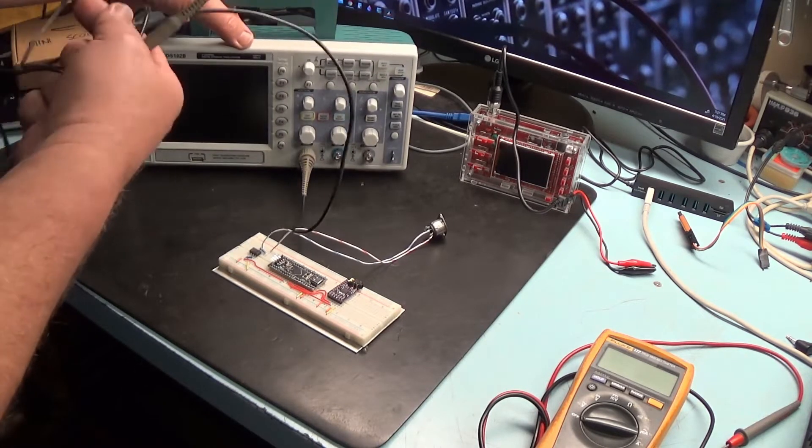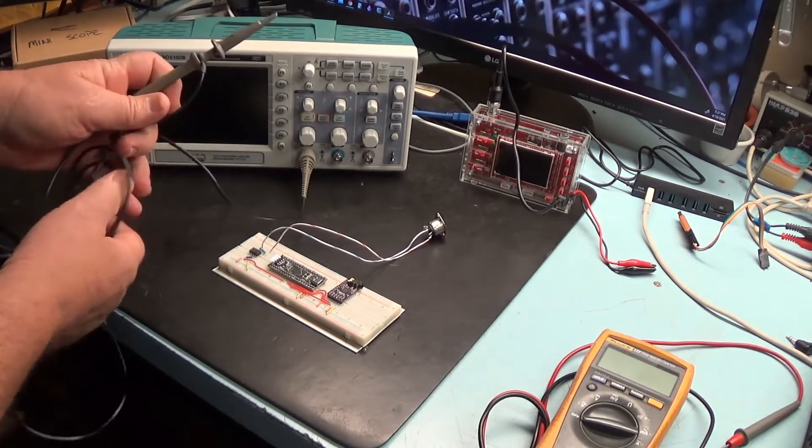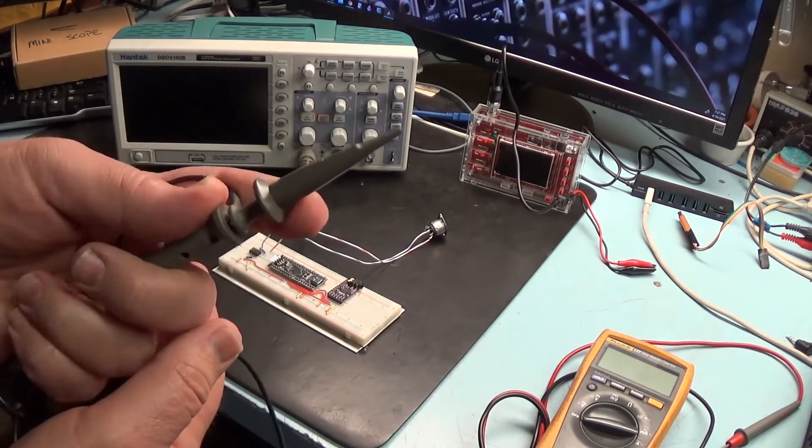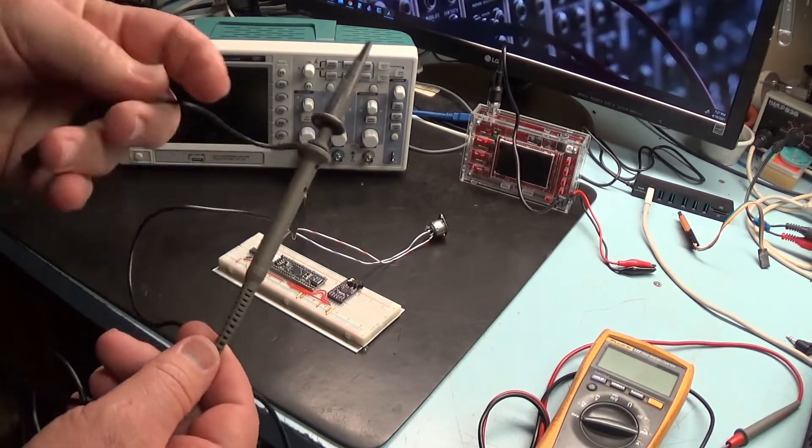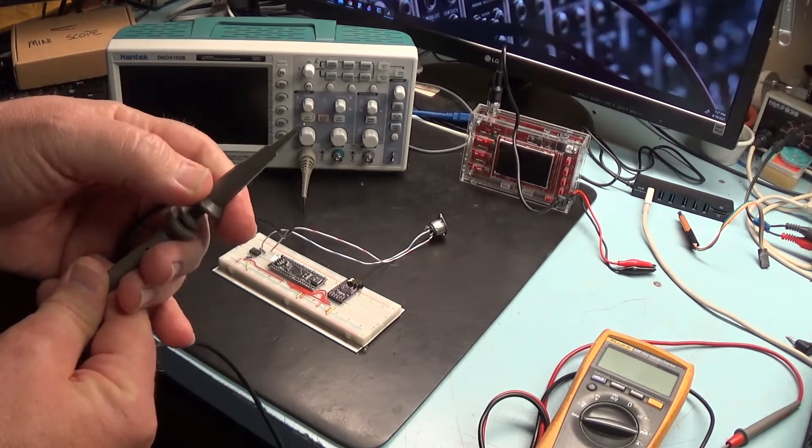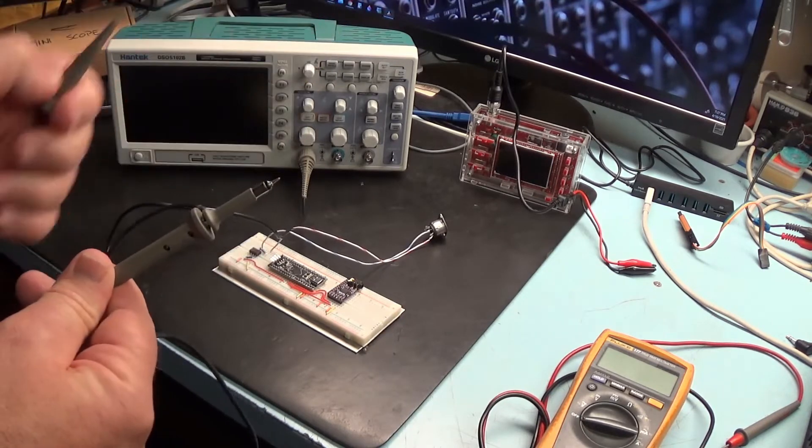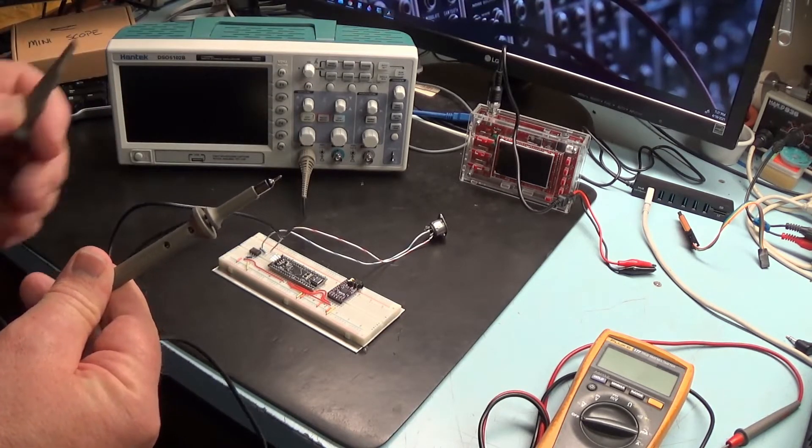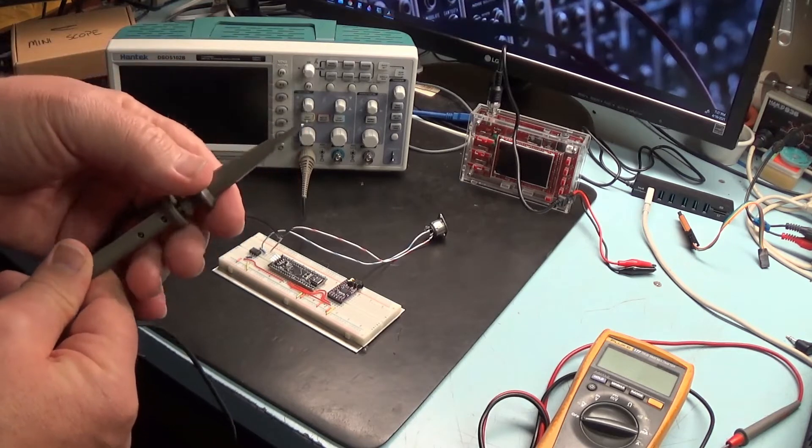This oscilloscope usually comes with a probe like this. This would be used for ground and either we would clip on to something or we could use this as a probe and check for signals.